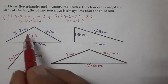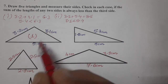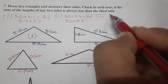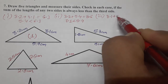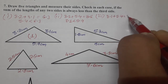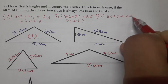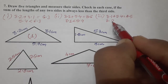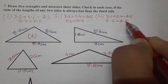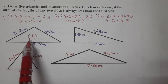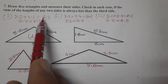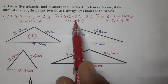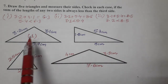Now the third case: we add 3.1 plus 5.4, which equals 8.5. The third side this time is 3.2, and 3.2 is less than 8.5. So for the first triangle, in all three cases, the sum of any two sides is greater than the third side — the third side is always less than the sum of the other two.